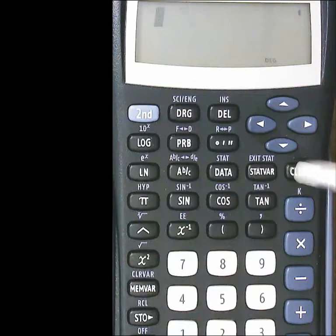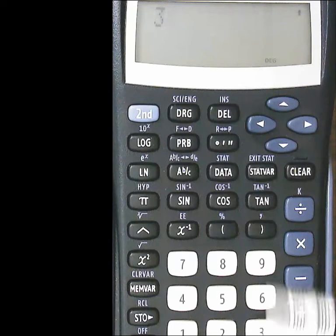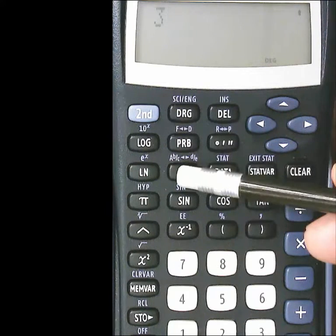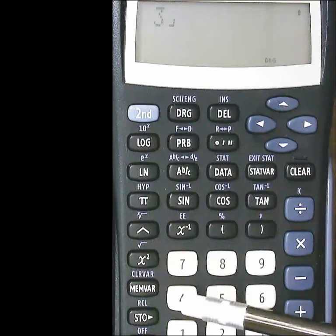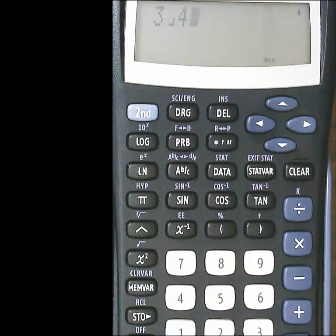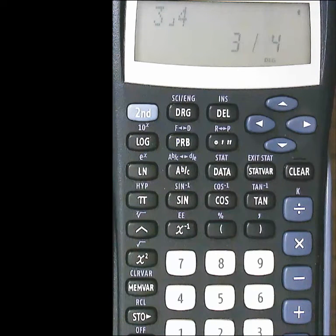If you just wanted to do 3 fourths, then you would just do your 3 button, and that fraction key, and then the 4. So that's how you would do 3 fourths, and that's what it looks like on my calculator at least.